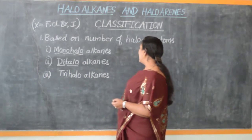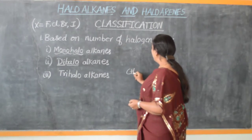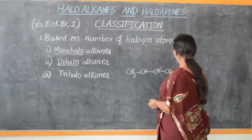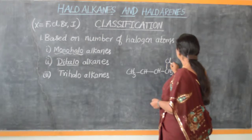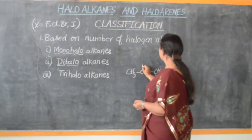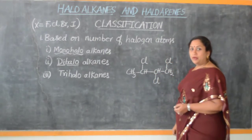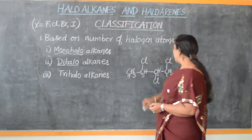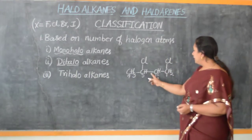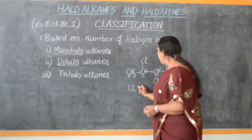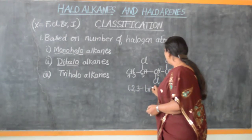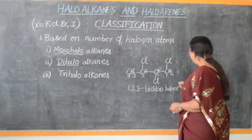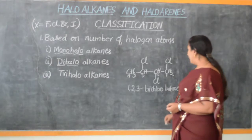Now let us take up an example for trihalo alkanes. Look at the compound that I am writing on the board. The compound has four carbon atoms: first, second, third, and fourth. The name of this compound is 1,2,3-trichlorobutane. This becomes an example of trihalo alkanes.